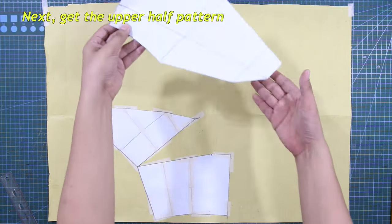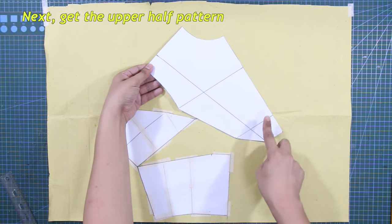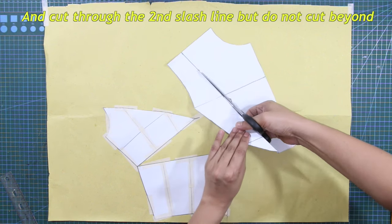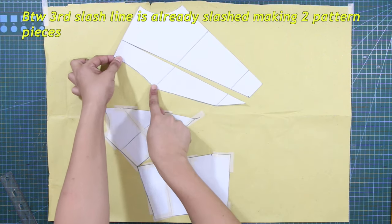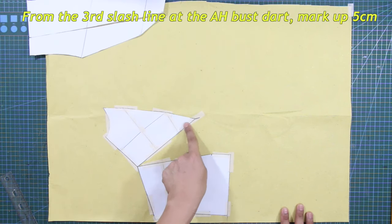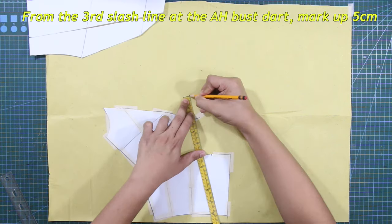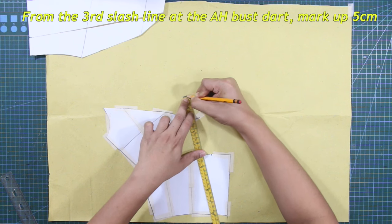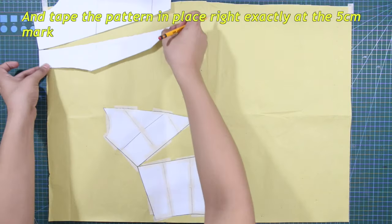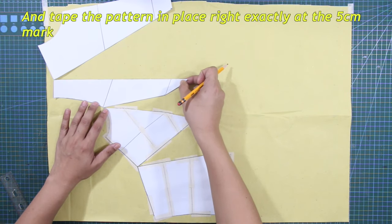Next, get the upper half pattern and cut through the second slash line, but do not cut beyond. By the way, third slash line is already slashed, making two pattern pieces. From the third slash line at armhole bust dart, mark up 5 cm and tape the pattern in place right exactly at the 5 cm mark.